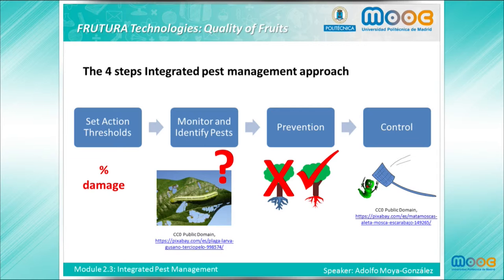Effective, less risky pest controls are chosen first, including highly targeted chemicals such as pheromones to disrupt pest mating, or mechanical controls such as trapping or weeding. If further monitoring, identification and action thresholds indicate that less risky controls are not working, then additional pest control methods would be employed, such as targeted spraying of pesticides and broadcast spraying of non-specific pesticides as a last resort.